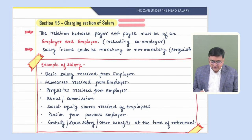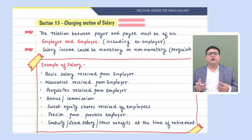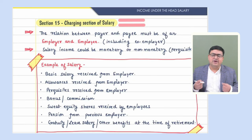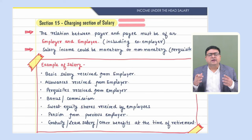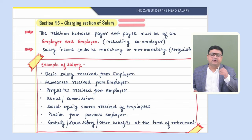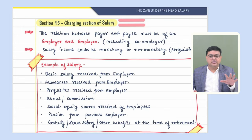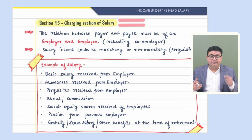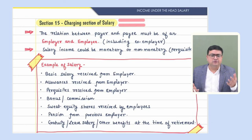Salary income received from an employer can be in the form of cash — monetary form — or in kind, specifically perquisites. Perquisites can be monetary, but mostly they are non-monetary: accommodation, motor car facility, or domestic servants provided by the employer. Whatever is received from the employer because of the employment contract, whether monetary or non-monetary, is taxed under the head salary.